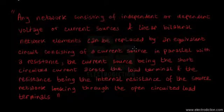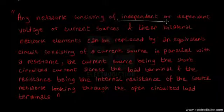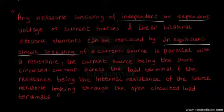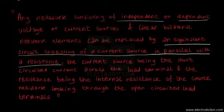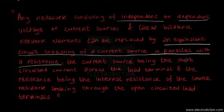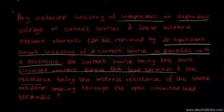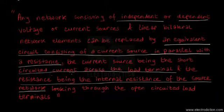The meaning of the statement is that any electrical network consisting of independent or dependent sources — voltage or current — and linear bilateral network elements like resistors, can be replaced by an equivalent circuit consisting of a current source in parallel with a resistance. This resistance is the equivalent internal resistance of the circuit, and the current source is the short-circuit current across the load terminals.